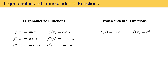You can take higher derivatives over and over again until you exhaust yourself. For the transcendental function natural log of x, the first derivative is 1 over x. The second derivative can be found by using the power rule on this result. For the function e to the x, the first derivative is easy to remember because it is the same as the function itself. Higher derivatives are all the same.